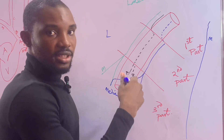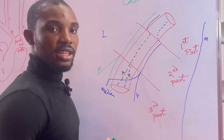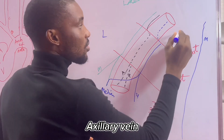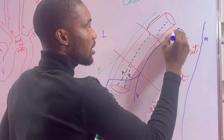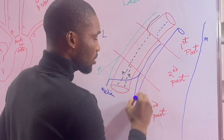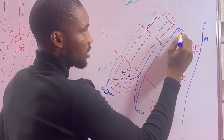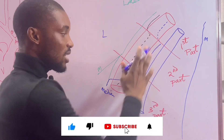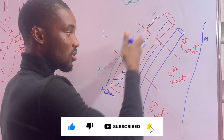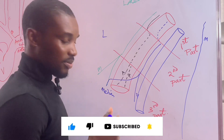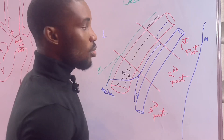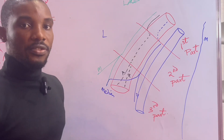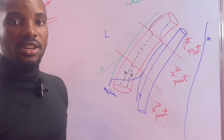The axillary vein runs medially throughout the entire course of the axillary artery. We will next study the various branches of the axillary artery.